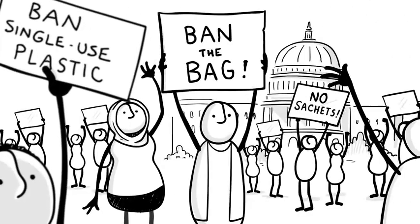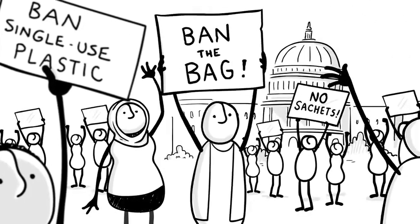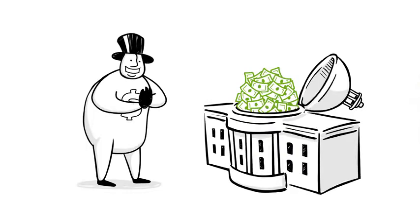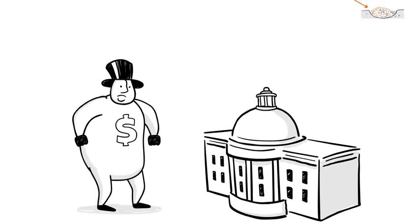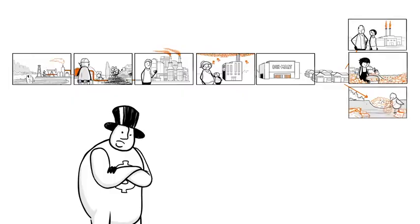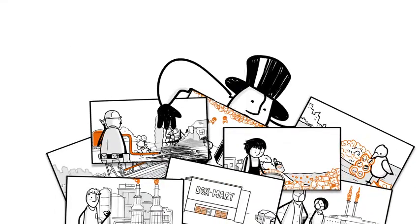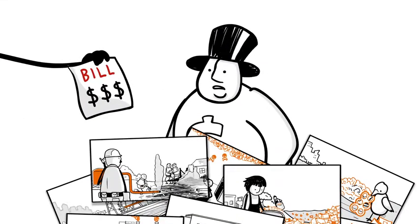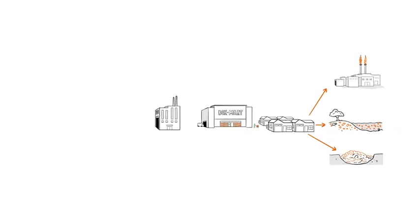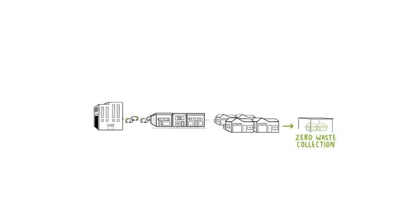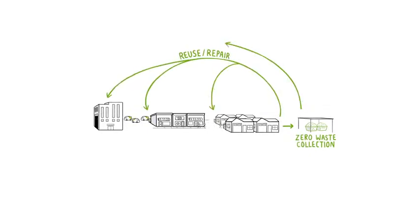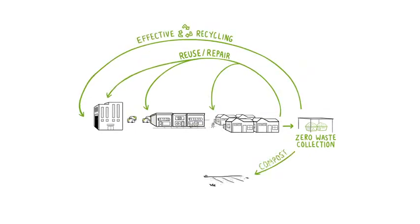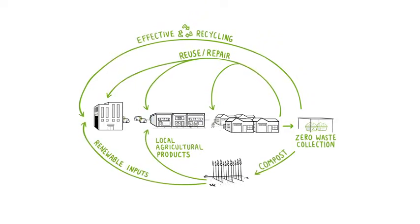Like phasing out the single-use plastics that pollute the most. Ending the fossil fuel subsidies that are fueling big plastic. And holding companies responsible for the plastic waste they create. That's how we can achieve our vision of a zero waste future, where all of our products and packaging can be reused or repaired, effectively recycled or composted. And ultimately, how we create a sustainable circular economy that works for both people and the planet.